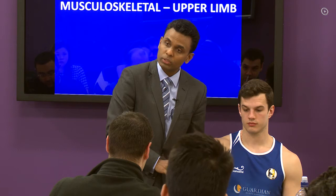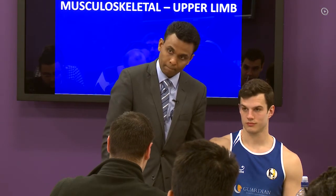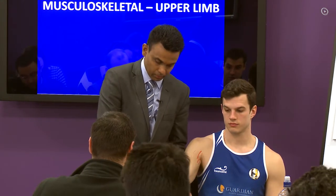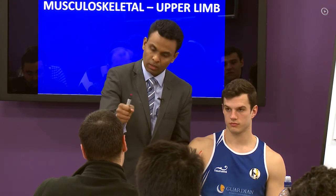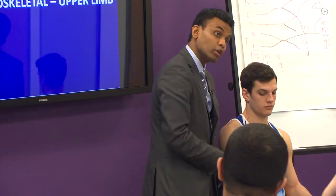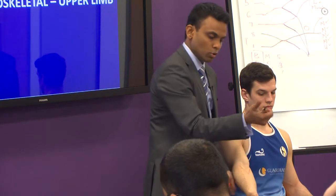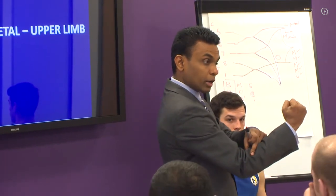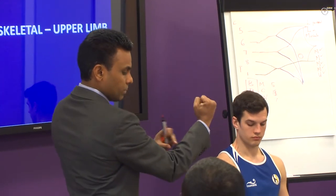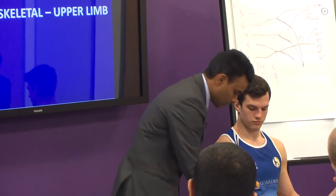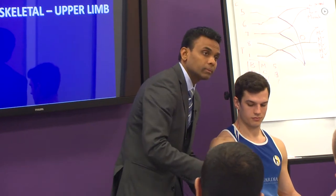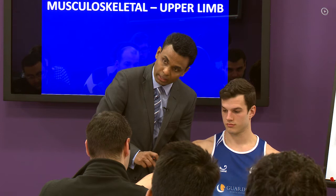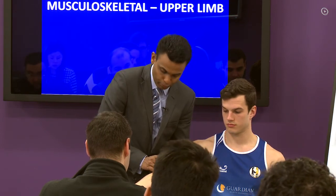The boundaries of the cubital fossa: the floor is the brachialis. On the lateral side is the brachioradialis — if you semi-pronate your forearm and then radially extend the wrist, the muscle you feel is the brachioradialis. That is your lateral boundary. On the medial side is the pronator teres, with an imaginary line between the two condyles completing the boundaries.